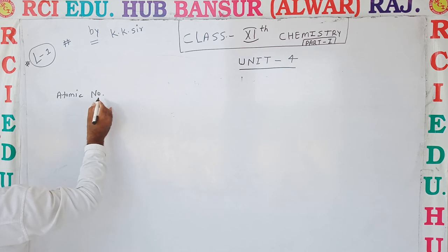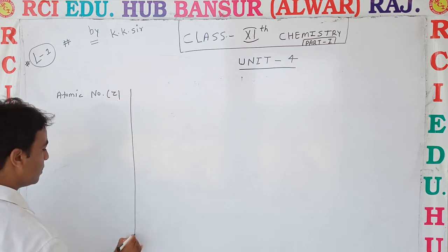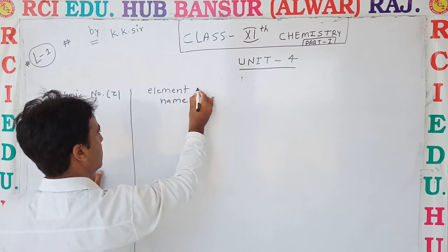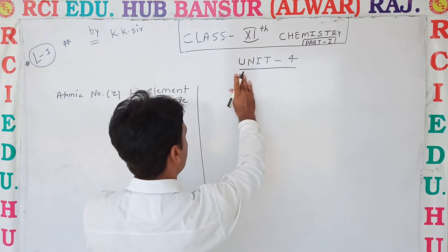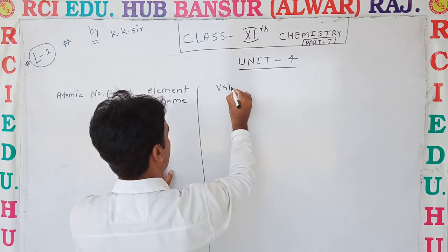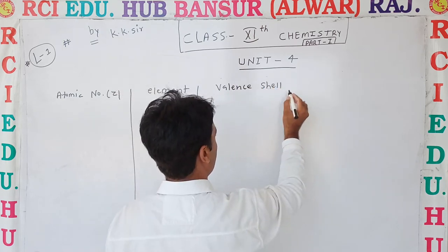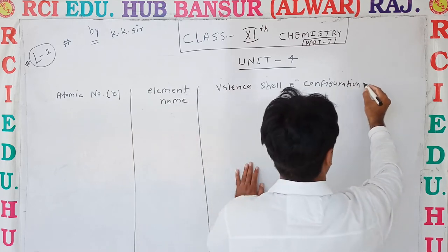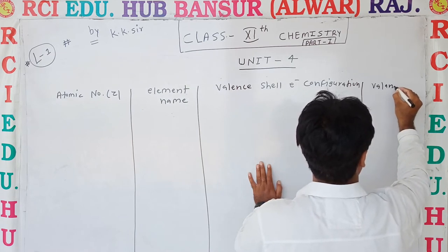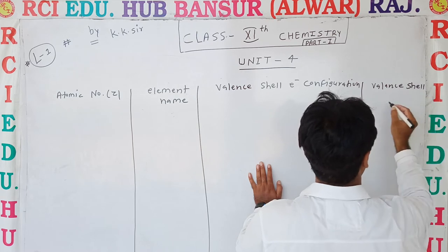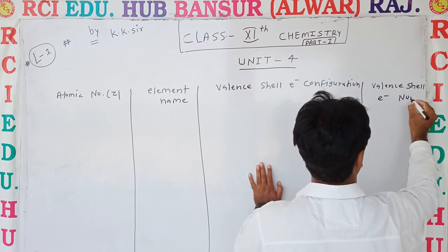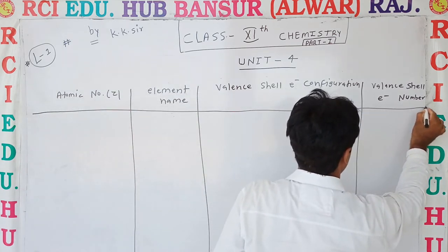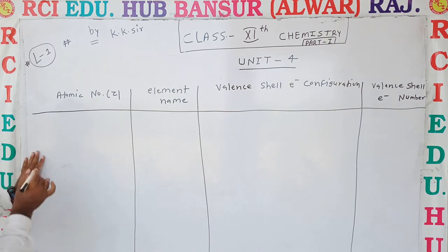The table shows the atomic number represented by Z, the element name, the valence cell electronic configuration, and the valence cell electron number. These are the most useful items for studying Chemical Bonding.